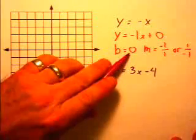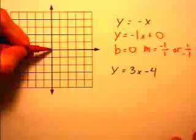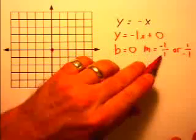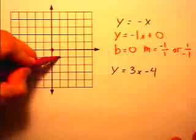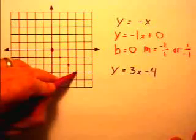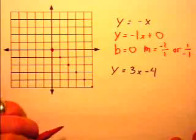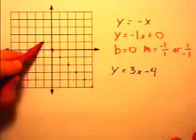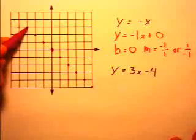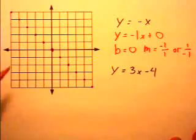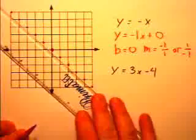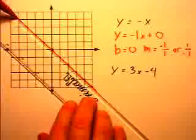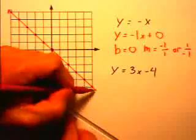To graph this line, we start with the y-intercept, which is 0, then go down 1 and right 1. We can continue that. Alternatively, we can go up 1 and left 1. If we've done everything right, since it is a linear equation, we'll get a line, and it does.